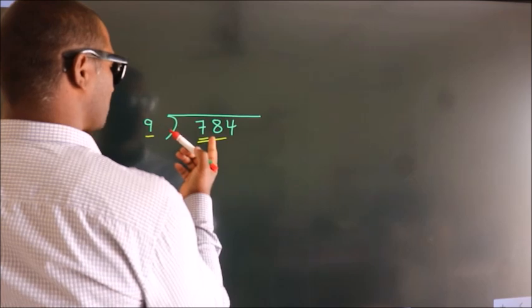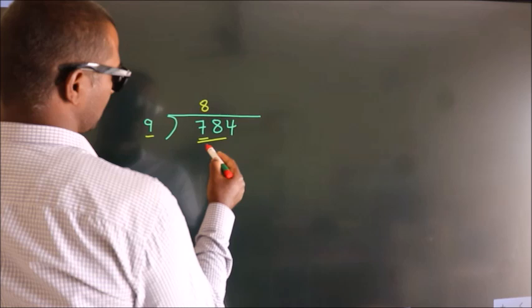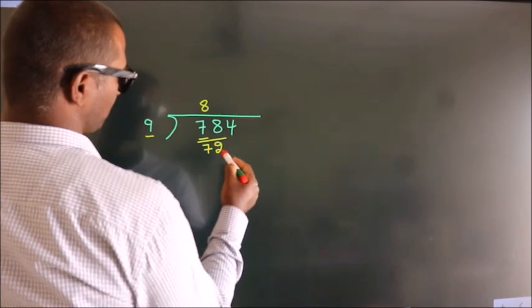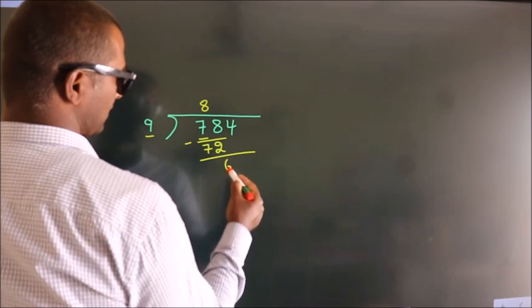A number close to 78 in 9 table is 9, 8, 72. Now, we should subtract, we get 6.